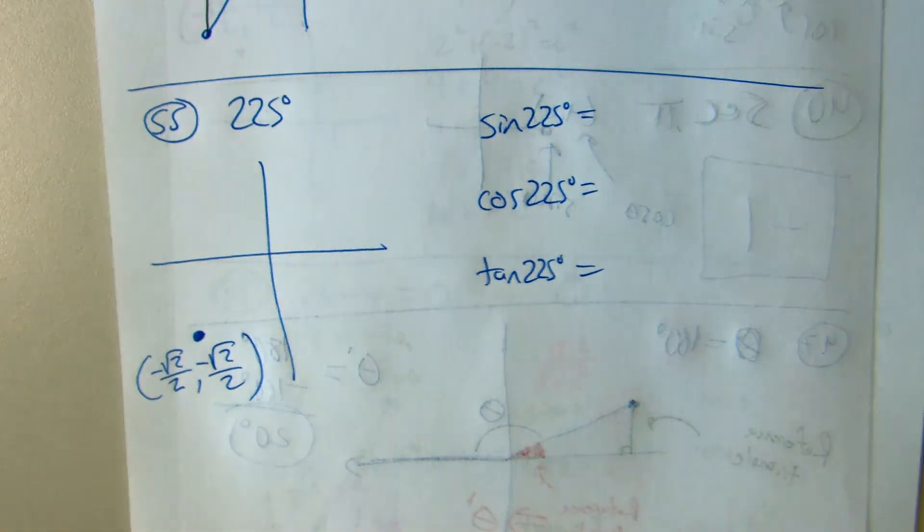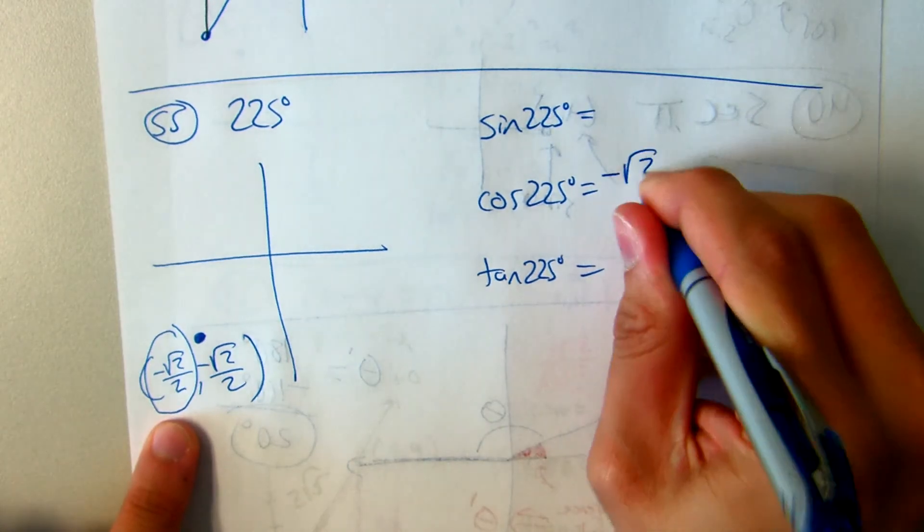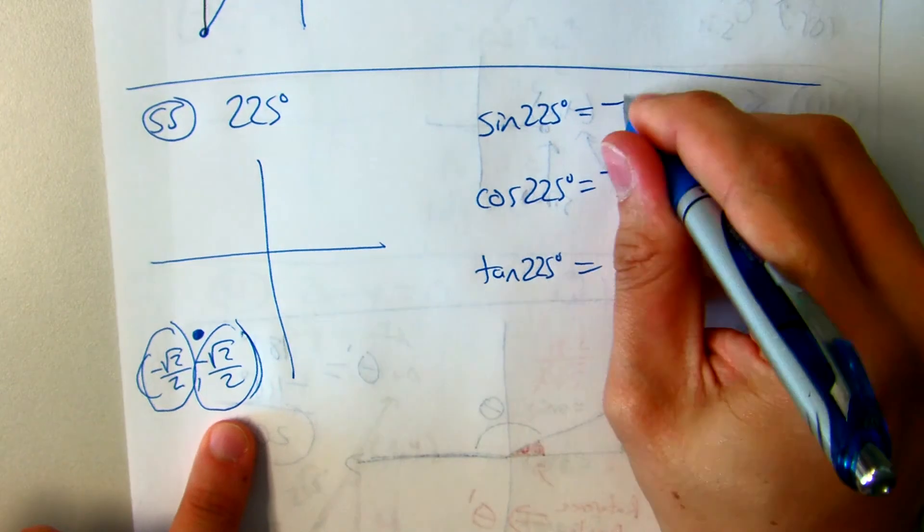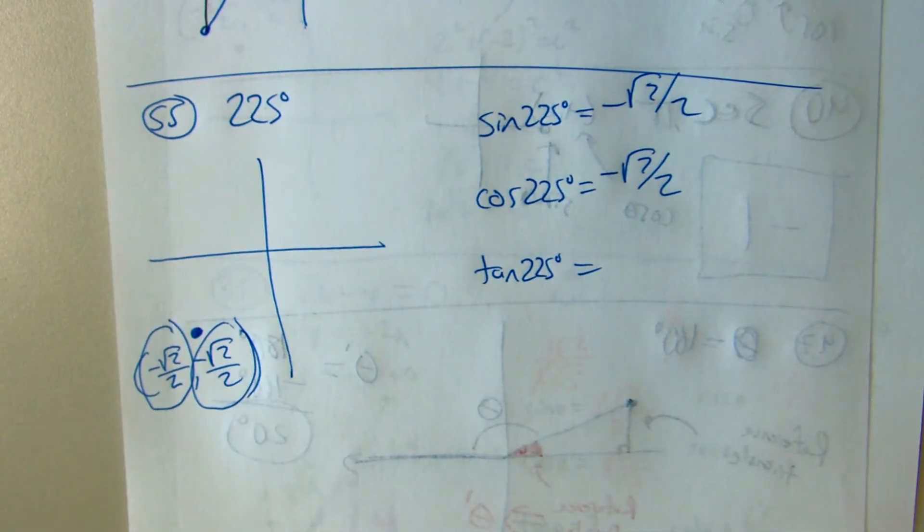And the third part of unit circle is always knowing that the x values are cosine. There's one of my three answers. The y value is sine. There's a second of my three answers.